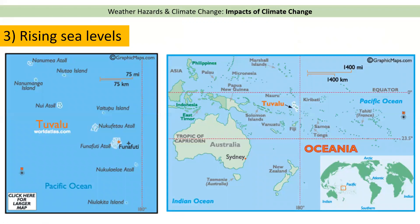So what's the impact of rising sea levels? Let's have a look at a place called Tuvalu. Tuvalu is located out in the Pacific Ocean, near Oceania, to the northeast of Australia and east of Papua New Guinea. When we zoom in, we can see that Tuvalu is a collection of very, very small, fairly low-lying islands.